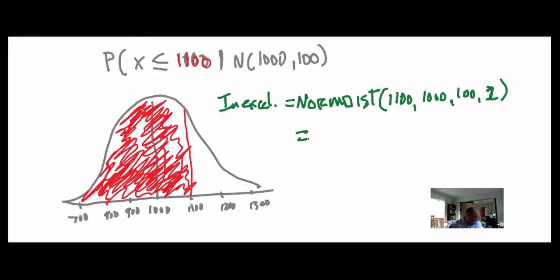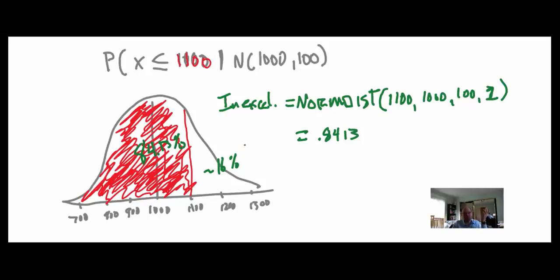Pause the video and try this. The result means this left chunk is 84.13% of the entire area under the curve. By default, the right tail is about 16% — that's 1 minus 0.8413. So there's an 84.13% chance he won't run out of gas, and equivalently a roughly 16% chance that he will run out.